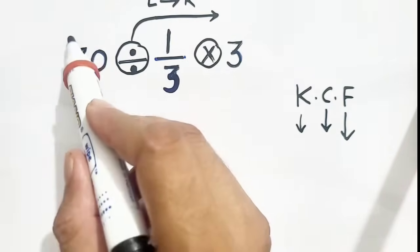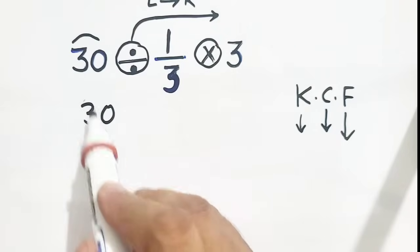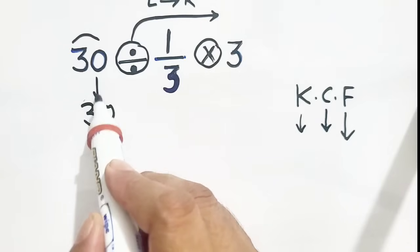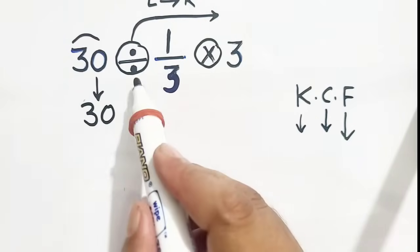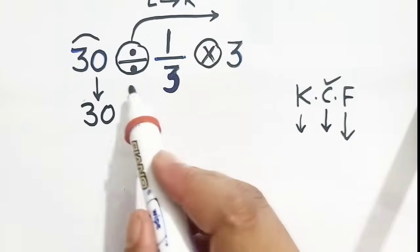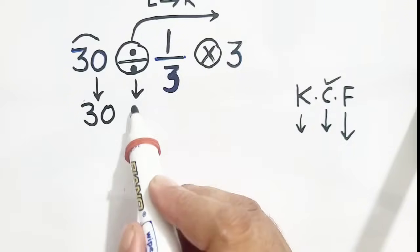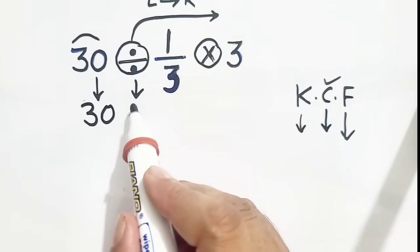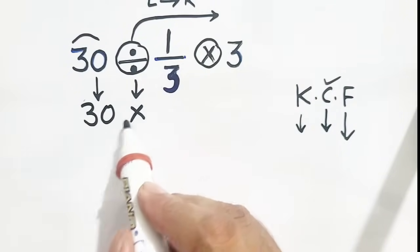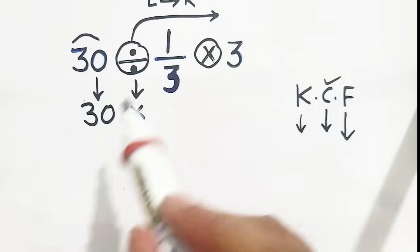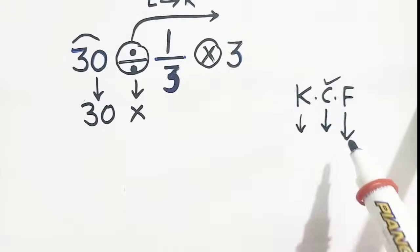So 30 we will keep it. And C means change—it is a divide sign, so we will convert it into multiplication. And F means flip. So we will flip it.